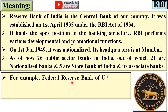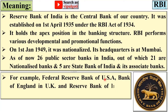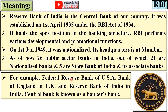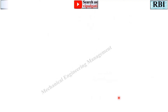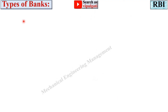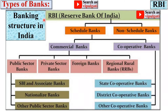For example, the Federal Reserve Bank is the central bank for the USA, the Bank of England is the central bank for the UK, and the Reserve Bank of India is the central bank of India. Sometimes the central bank is also known as the bankers' bank, because RBI is the apex of all the banks.